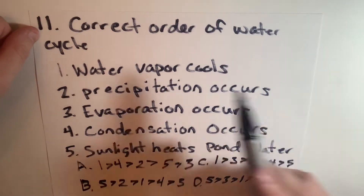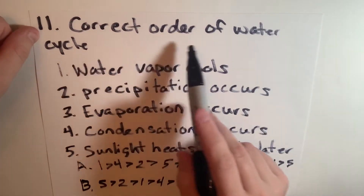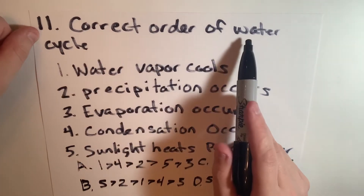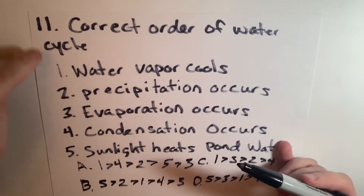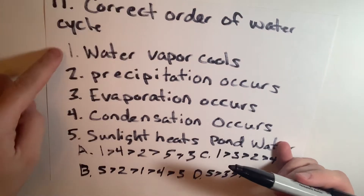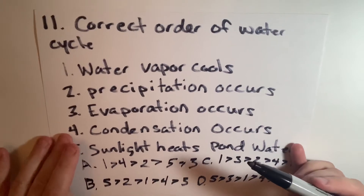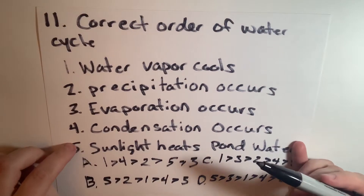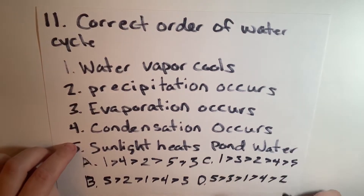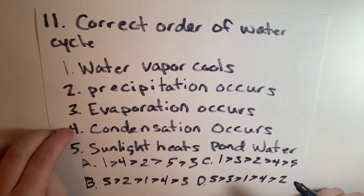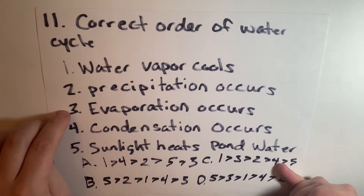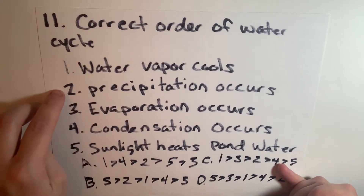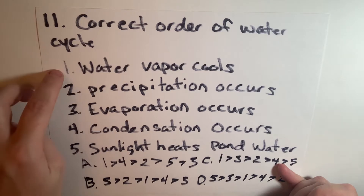Number 11 asks about the correct order of the water cycle. These are all out of order and we have a lot of them: sunlight heats water pond, condensation occurs, evaporation occurs, precipitation occurs, and water vapor cools.